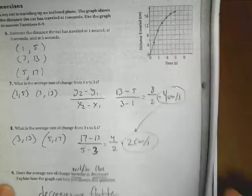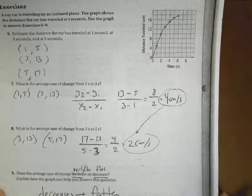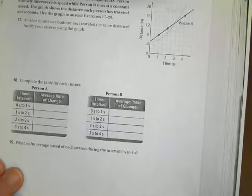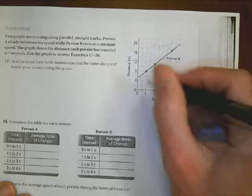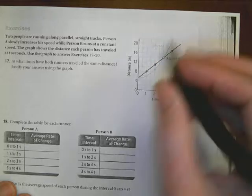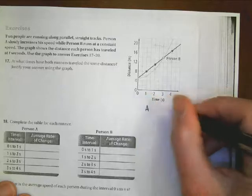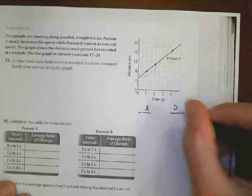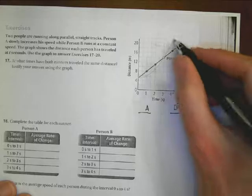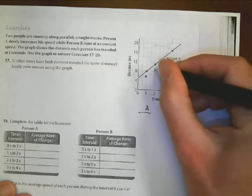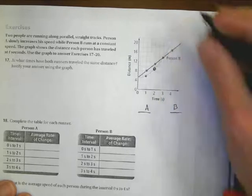Looking at number 8, we're looking at rate of change from 3 to 5. So the value at 3 is (3,13), and 5, we're at (5,17). So y2 - y1 over x2 - x1 equals 17 - 13 is 4. 5 - 3 is 2. And that's going to equal 2 centimeters per second there. So my rate of change is there.